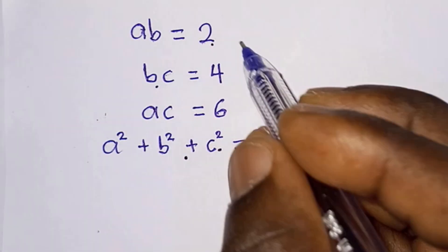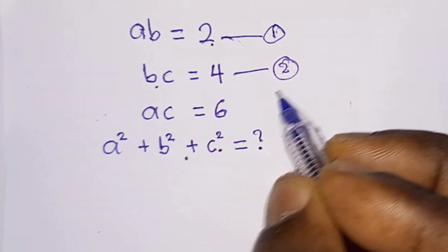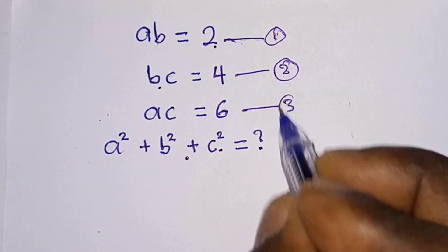First of all, let's label the equations. We'll call this equation 1, this equation 2, and this equation 3.